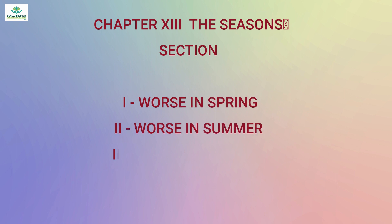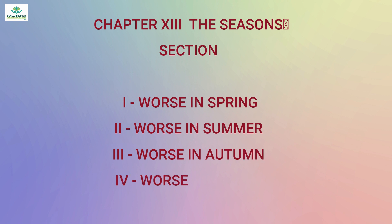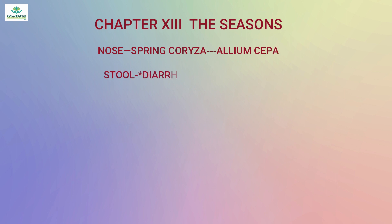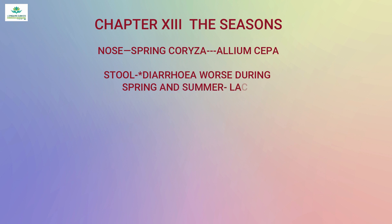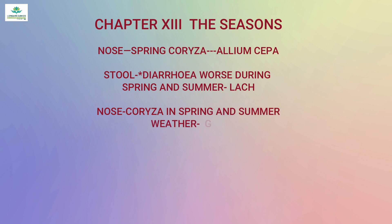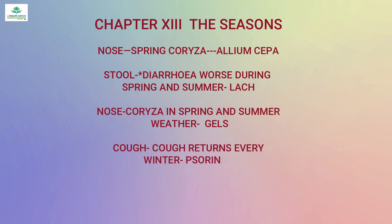Chapter 13 is 'The Seasons,' with sections on worse in spring, worse in summer, worse in autumn, and worse in winter. Rubric examples include: 'Coryza in spring' — Allium cepa; 'Diarrhea worse during spring and summer' — Lachesis; 'Coryza in spring and summer weather' — Gelsemium; 'Cough returns every winter' — Psorinum.